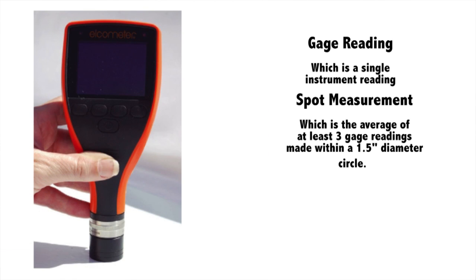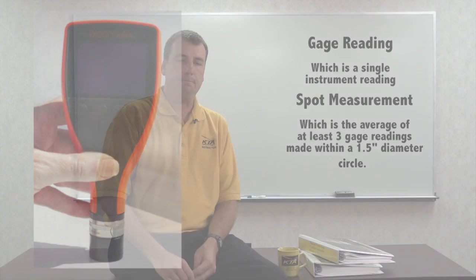The second definition is spot measurement, which is the average of at least three gauge readings made within a one and a half inch diameter circle. Acquisition of more than three gauge readings within a spot is permitted. Any unusually high or low gauge readings that are not repeated consistently are discarded. The average of the acceptable gauge readings is a spot measurement.